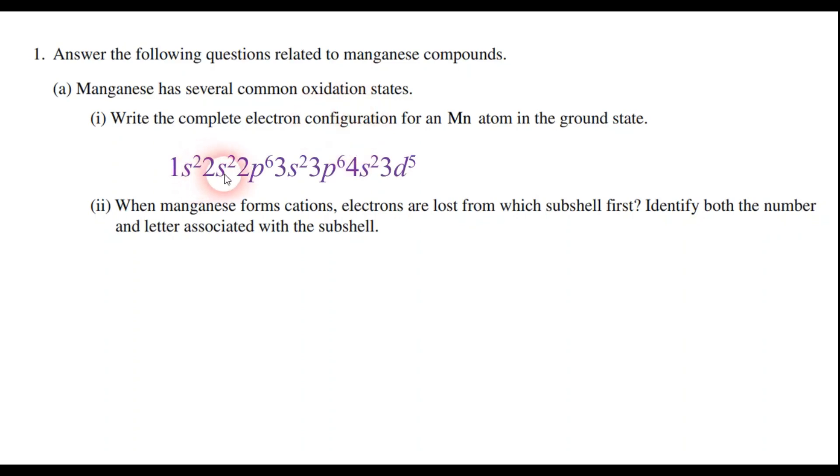So it needs to look like this: 1s² 2s² 2p⁶ 3s² 3p⁶ 4s² and 3d⁵. Now the question does say the complete electron configuration, and so I'm not sure if they would accept the noble gas abbreviation, but that is a possibility.